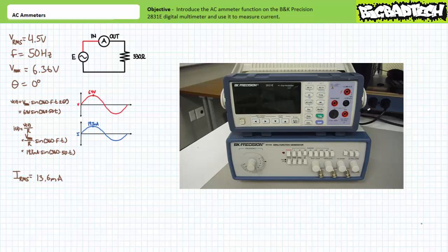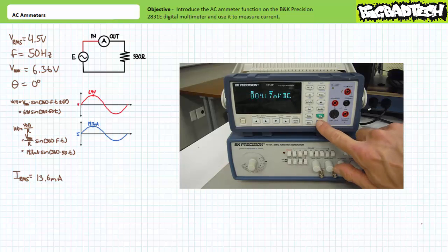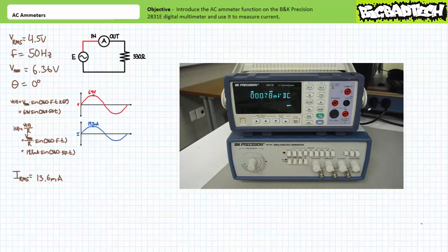Upon powering up the BK Precision 2831E DMM, we see it does a quick functions check and immediately defaults to the DC voltmeter function. Let's enable the AC ammeter function. The AC ammeter function on the BK Precision 2831E DMM resides in the alternative function set. To access the alternate function set, press the light blue shift key in the lower right. Note the AC ammeter section written in light blue above the AC voltmeter function. Press AC ammeter.